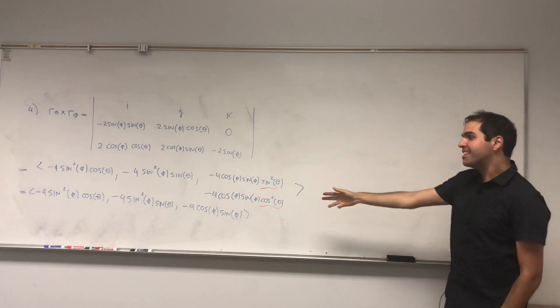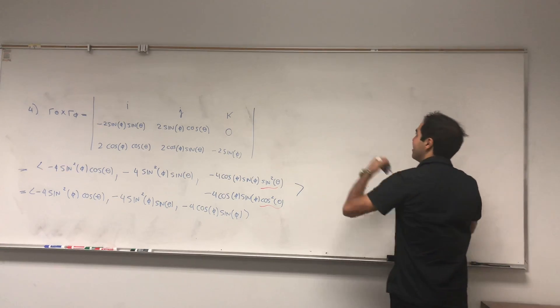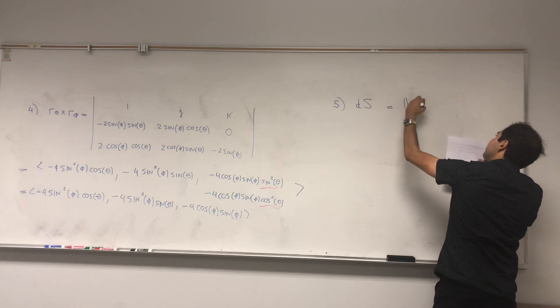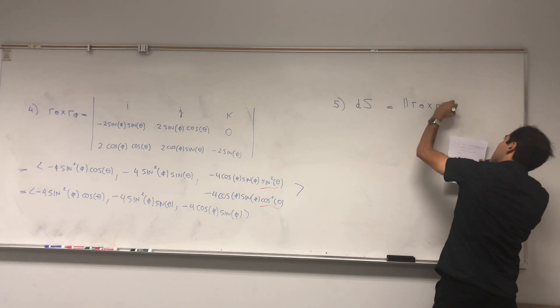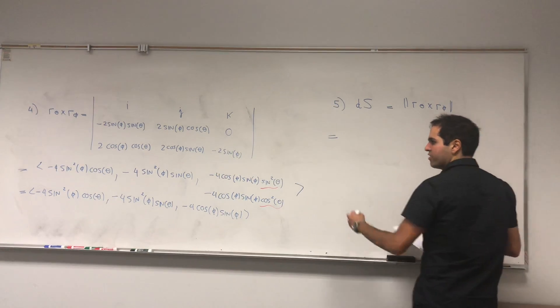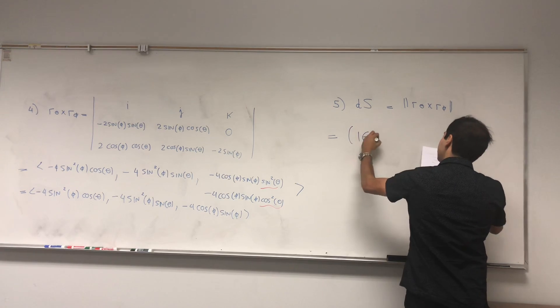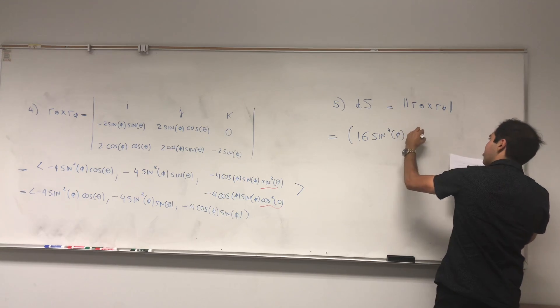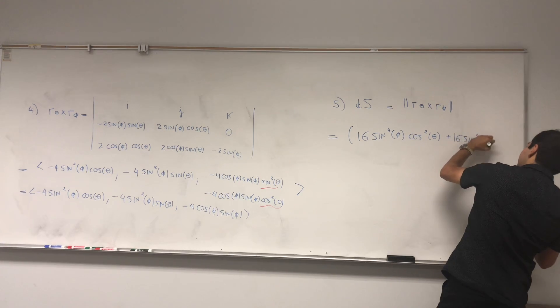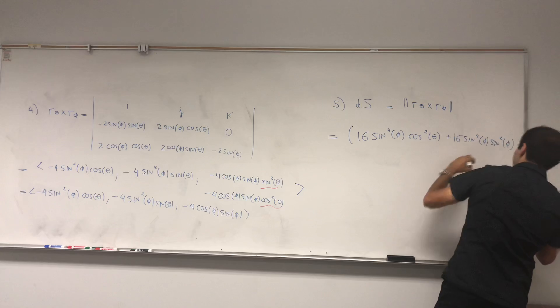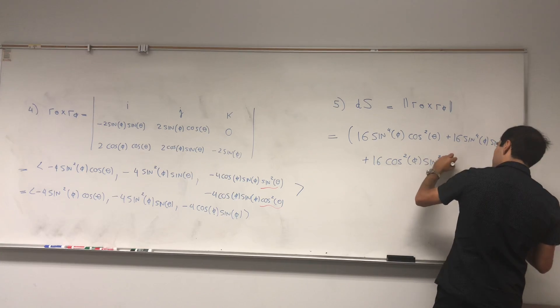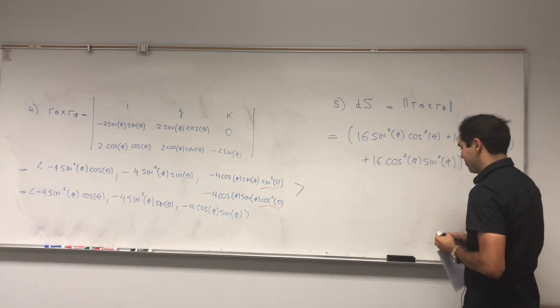The next thing is we want to take this vector and calculate its length and let's call that dS. And you'll see why. dS is the length of r_theta cross r_phi. How do you find the length of this vector? You take square root of the sum of squares of the components. So 16 sin⁴(phi) cos²(theta) plus 16 sin⁴(phi) sin²(theta) plus 16 cos²(phi) sin²(phi) to the square. Good.